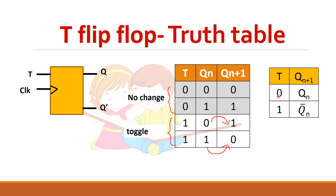So T equal to zero means you will get no change in the output, that is Qn will be the output. Whereas when T is equal to one, it will toggle, so you will get Qn bar as the output.